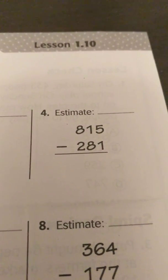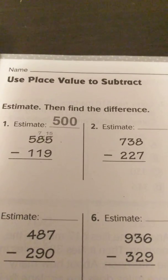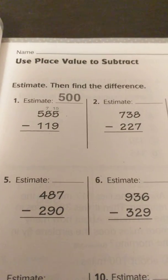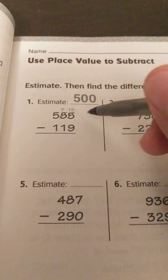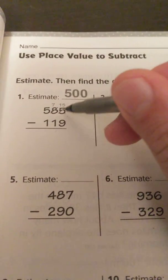This is third grade Go Math lesson 1.10, and today we'll use place value to subtract. The directions say estimate, then find the difference. So all we're doing here is trying to find a quick estimate of these problems.